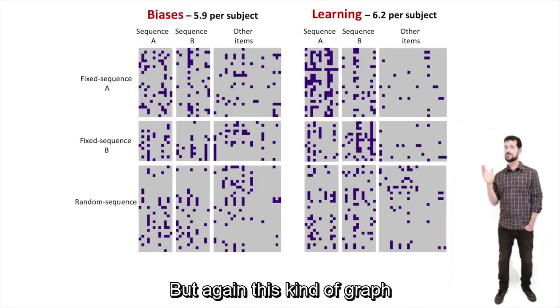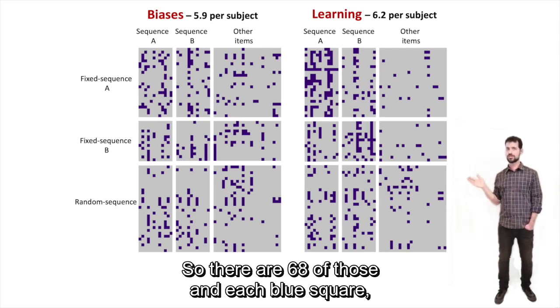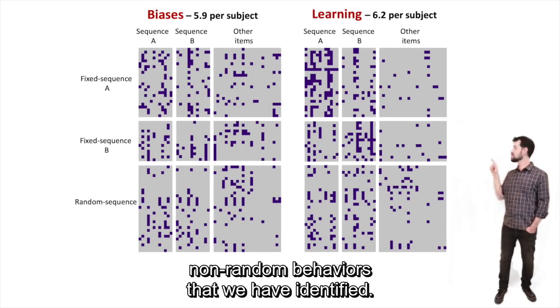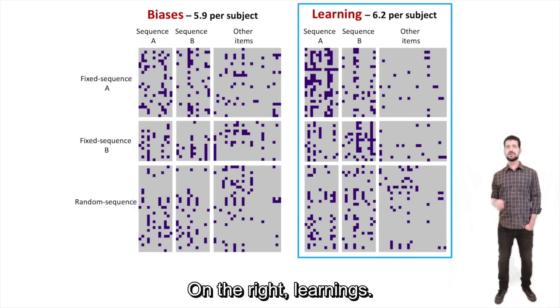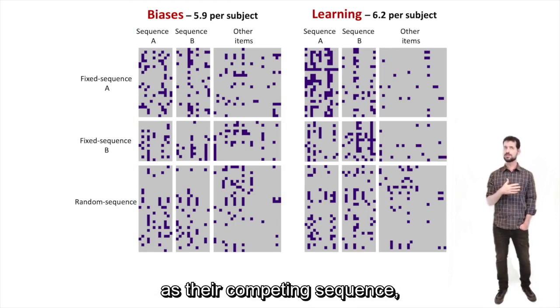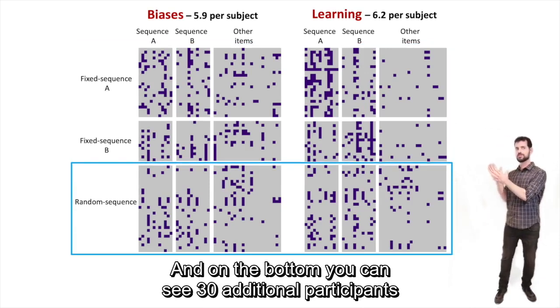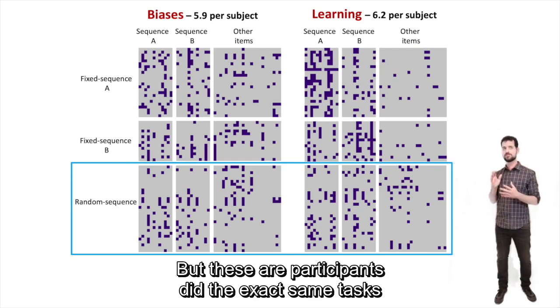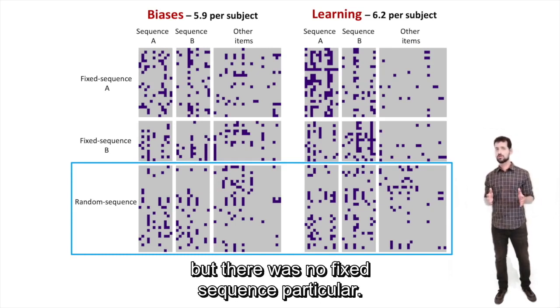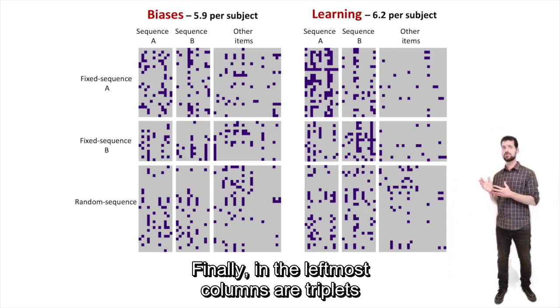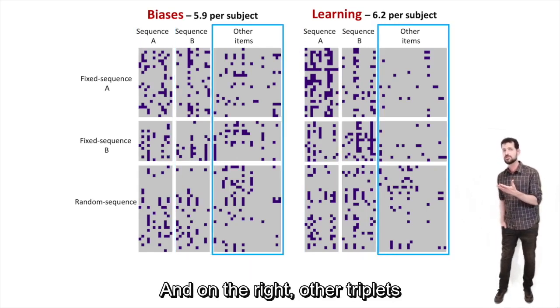What we get is this kind of raster plot for non-random behaviors, which I'll break down a bit. Each row here is a single participant, so there are 68 of those, and each blue square is a non-random behavior that we have identified. On the left are biases, on the right are learned responses. Some participants had sequence A as their main sequence and sequence B as their interference sequence, and some had it the other way around. On the bottom you can see 30 additional participants we ran with a random sequence of targets. So these participants did the exact same task with the same lower order statistics of where targets appear, but there was no fixed sequence that they could learn.